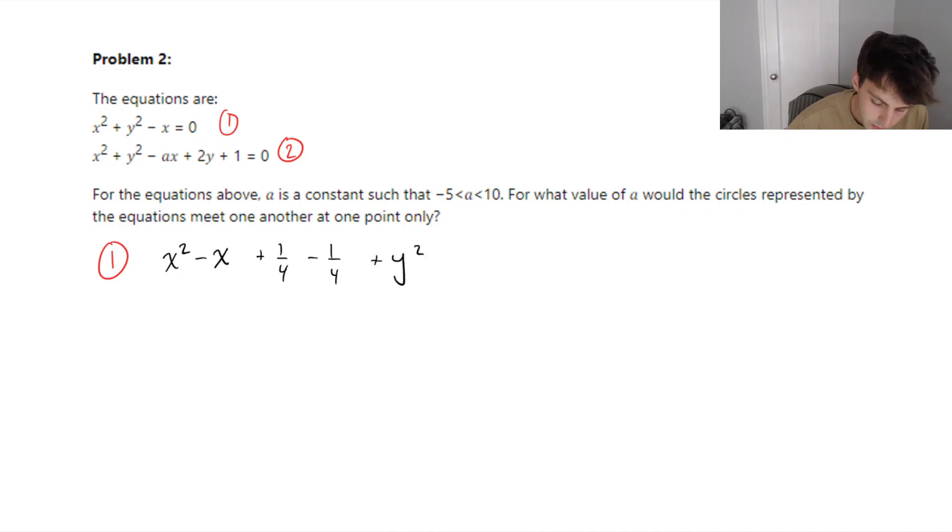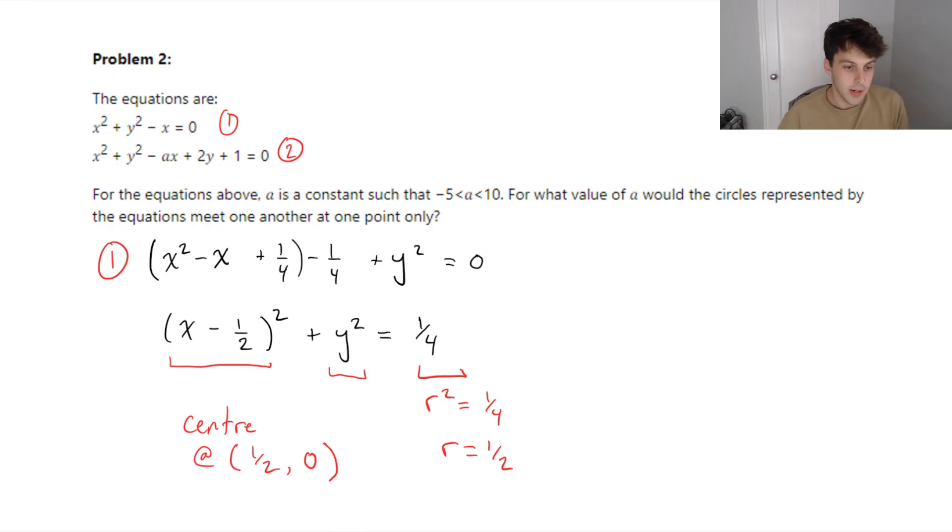And we're left with our plus y squared equals 0. We can now see here that these first three terms can be simplified to x minus half squared, and then we're left with plus y squared, and we can move the 1 fourth to the other side. So, now we can very clearly see that the center of our circle is shifted to the right by a value of half on our x-axis. And we can see from the y, it's not shifted at all from the y-axis. And we can see here that our r squared is equal to 1 fourth, which means that our radius is going to be equal to a half. So, we can write here, center at a half, 0.